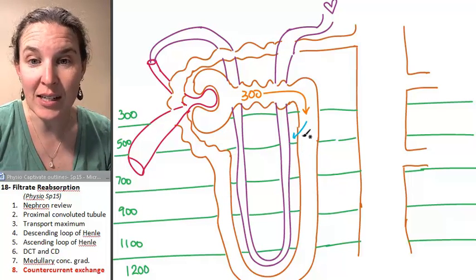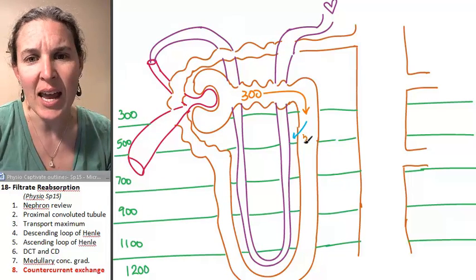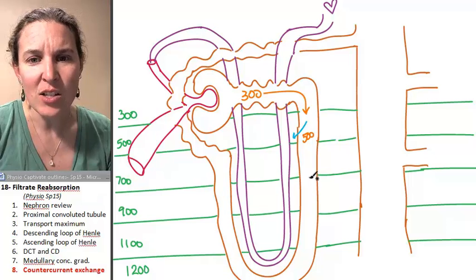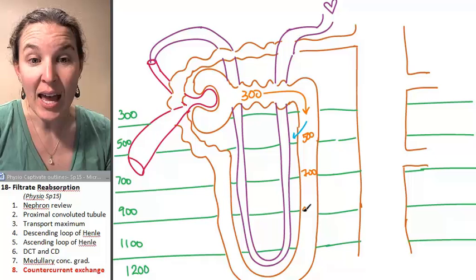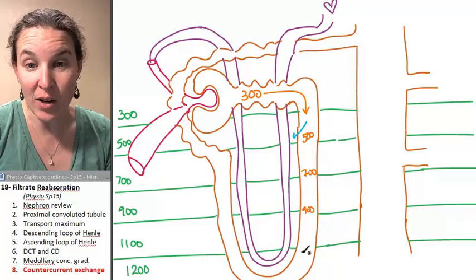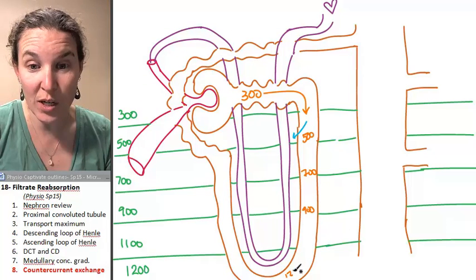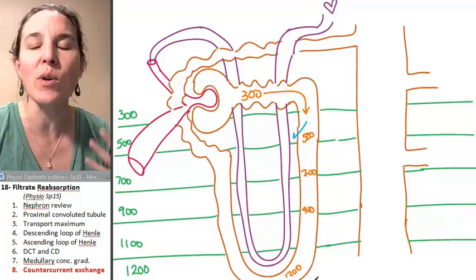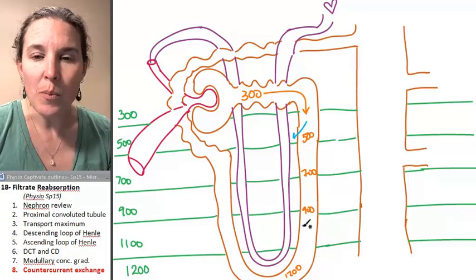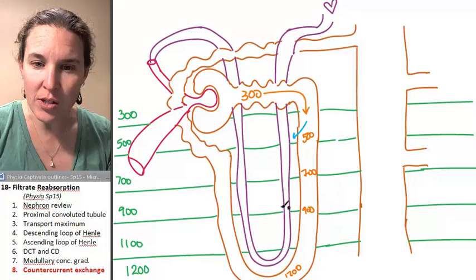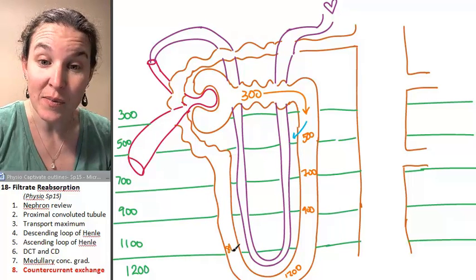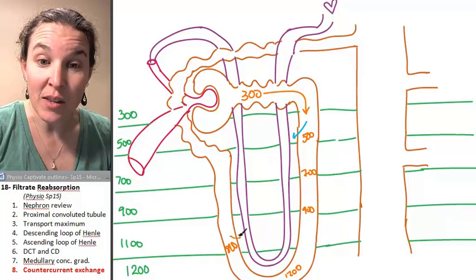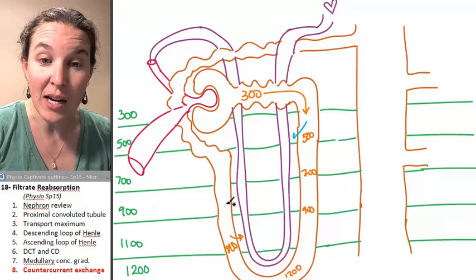That's going to concentrate the filtrate. The filtrate is going to get more and more concentrated. And we've done this, so you're cool that we keep getting water out the descending loop of Henle. It's going to keep coming out until we reach the base where now we've gotten rid of so much water. But now that water has gone into the interstitial space. Now we're going to pump solutes out. So I'm telling you that our solutes are getting pumped out now.